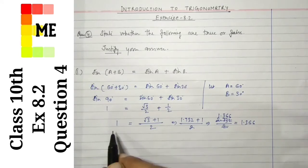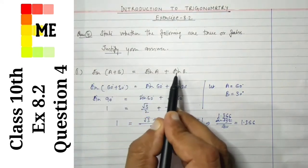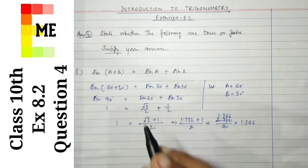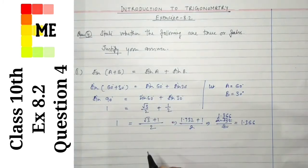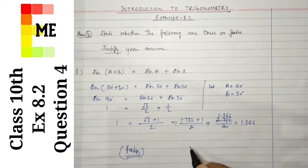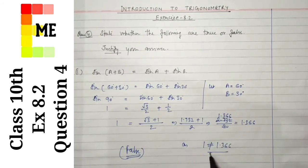So our statement that sin(A + B) = sin A + sin B is wrong. The statement is false, as 1 is not equal to 1.366.